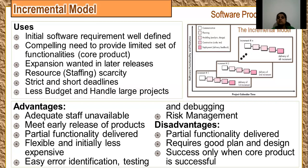Disadvantages of the incremental model: partial functionality is delivered and not the whole product. If you expect that when you receive your core product you will work very efficiently, that is a wrong notion, because some features not currently needed are still not with you, so in an emergency you cannot use them. It requires good planning and design — if you do not plan properly, you won't implement the incremental deliveries properly. This model is successful only if your core product is successful. If your core product fails, the incremental model will have no benefits because you cannot deliver the next increments.